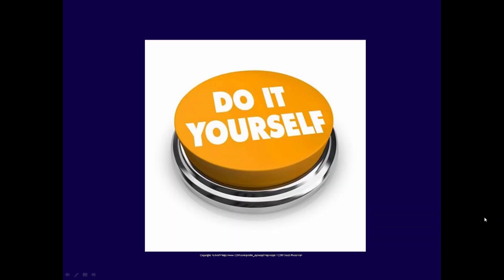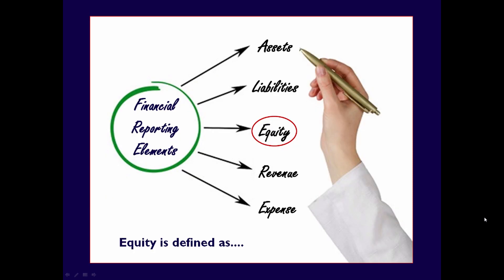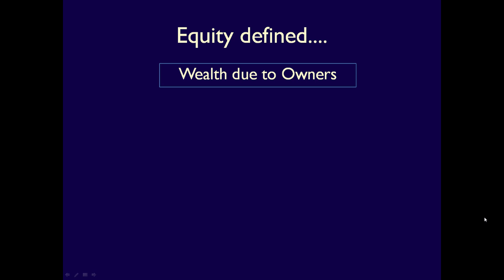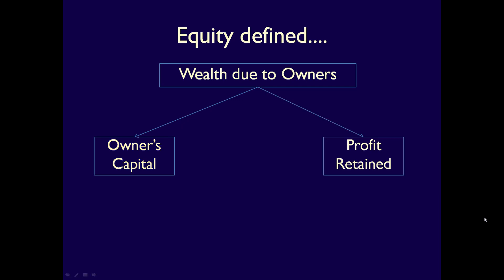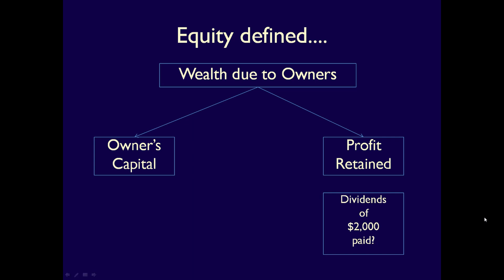Stop and list all your liabilities. Some students don't think they have any, but if you use a credit card and haven't yet paid your bill, or you have a cell phone bill, you probably have liabilities. Let's move on to equity. Equity is equal to the wealth that is due to the owners of the business, and it is made up of two items. First, equity is the capital provided by the owners — for instance, if you start a business with $20,000 of your own money, then you have $20,000 of capital recorded as equity. Second, equity is the profit that the business generates and keeps — if the business has a profit of $10,000, equity goes up by $10,000. If a portion of that profit was paid out as dividends, equity would increase by the profit less the dividends.